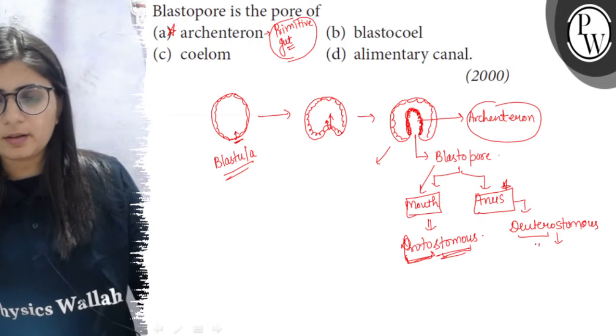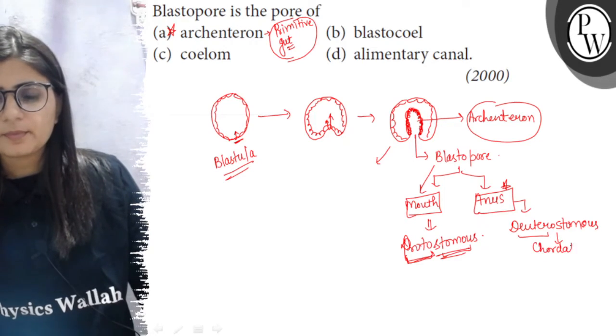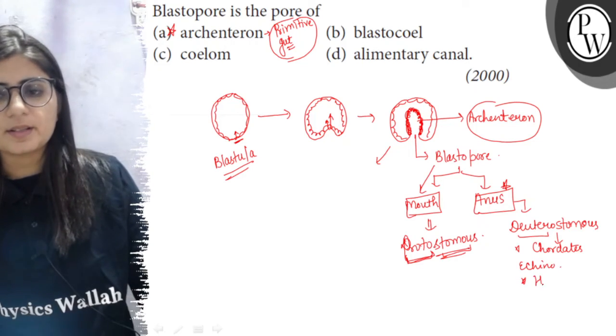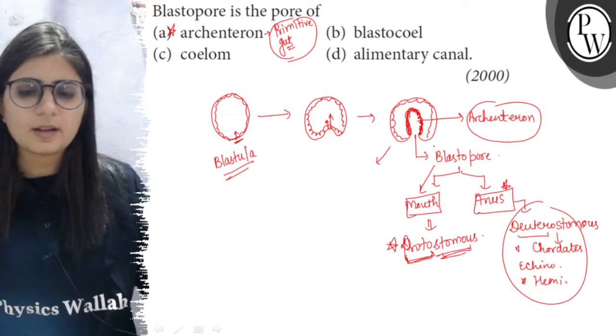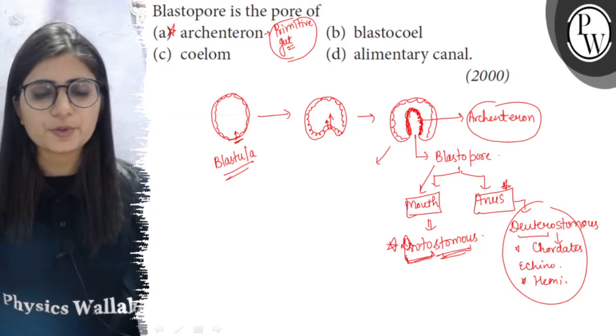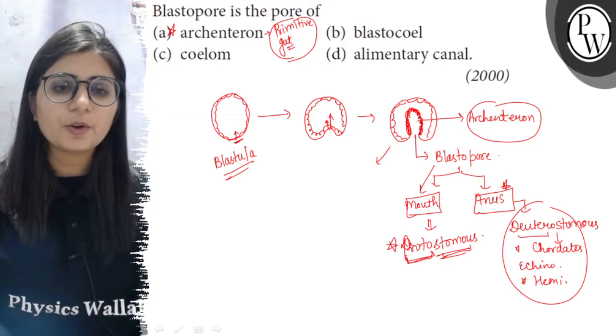Human beings or all the chordates, echinoderms, and hemichordates are deuterostomous, while rest of the animals are protostomous. Blastopore is the pore of archenterone.